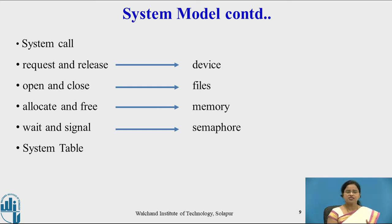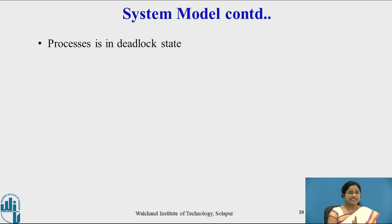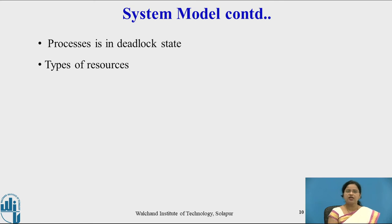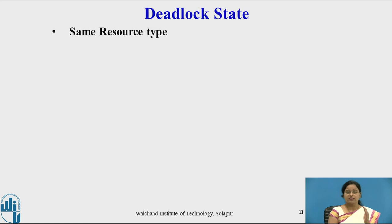The system table maintains a record of which resource is allocated to which process and which resource has been freed. It maintains all records of allocation and deallocation of resources. A process is in a deadlock state when it never changes its state — that state being the waiting state. Resources in the system can be physical or logical resources.